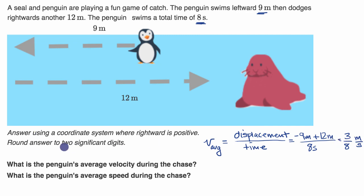But they want us to go to two significant digits, so I'll write it as a decimal. Three-eighths is the same thing as 0.375, but since they want us to round to two significant digits, I'll just say 0.38 meters per second.